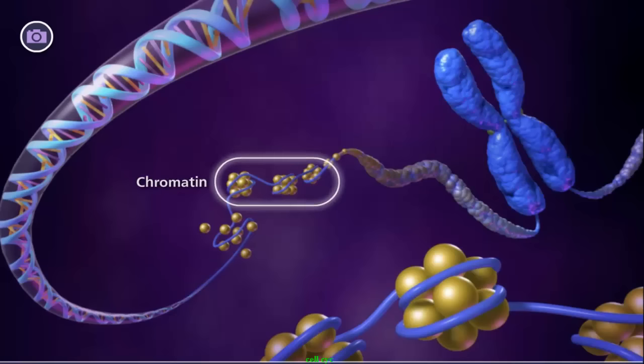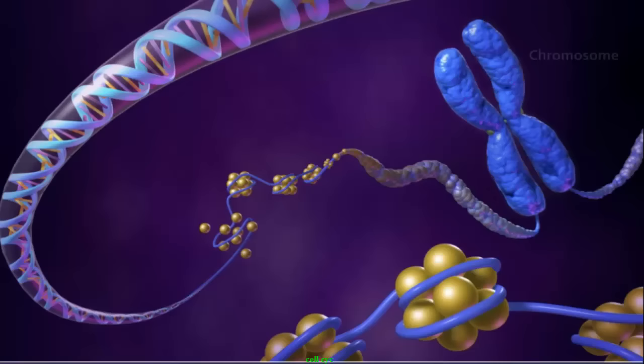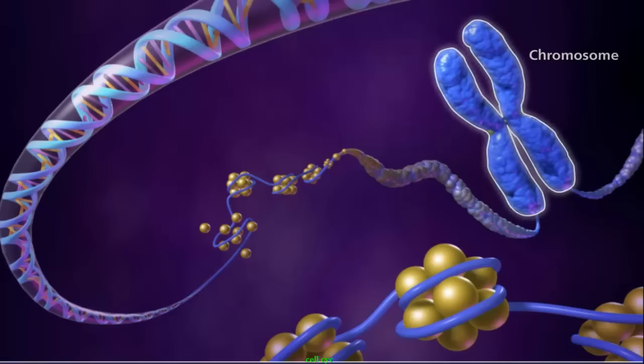As a cell prepares to divide, chromatin coils up further, shortening and condensing the chromosome. The replicated chromosomes are called sister chromatids.